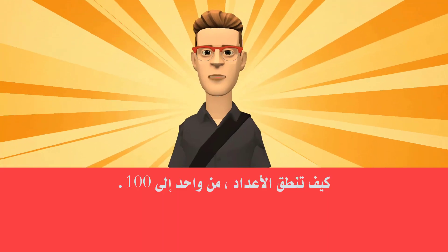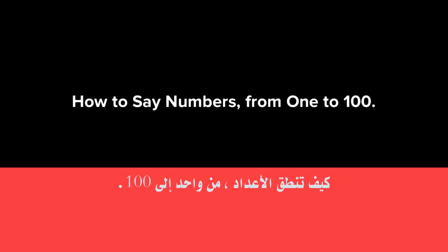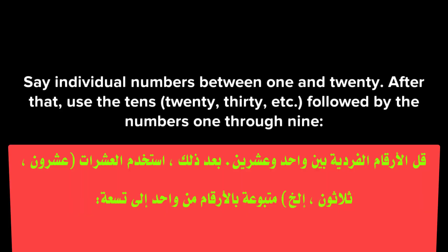How to say numbers from 1 to 100? Say individual numbers between 1 and 20. After that, use the tens — 20, 30, etc. — followed by the numbers 1 through 9.